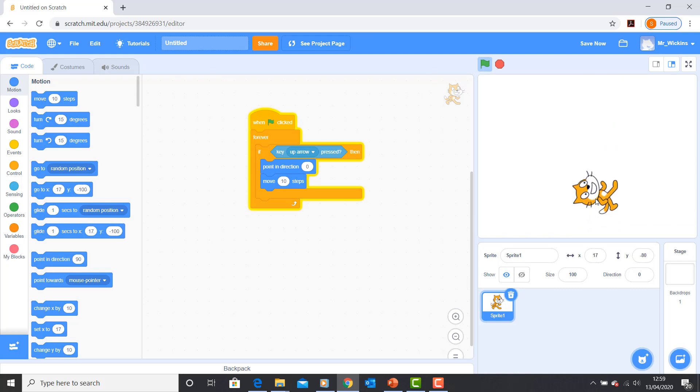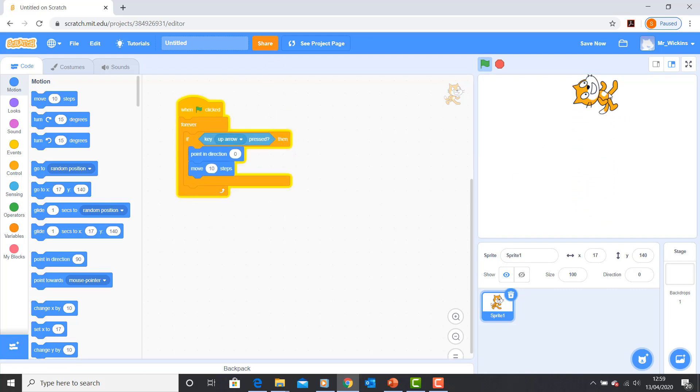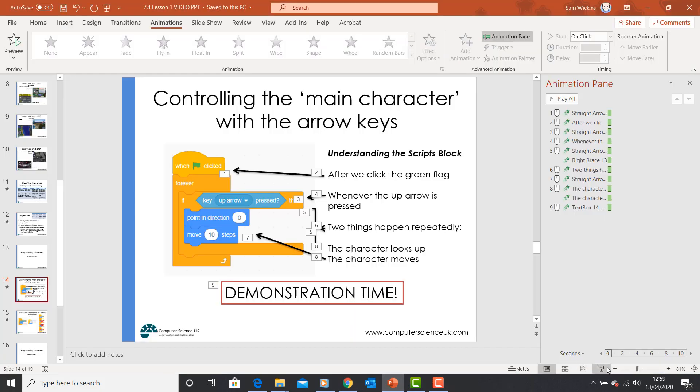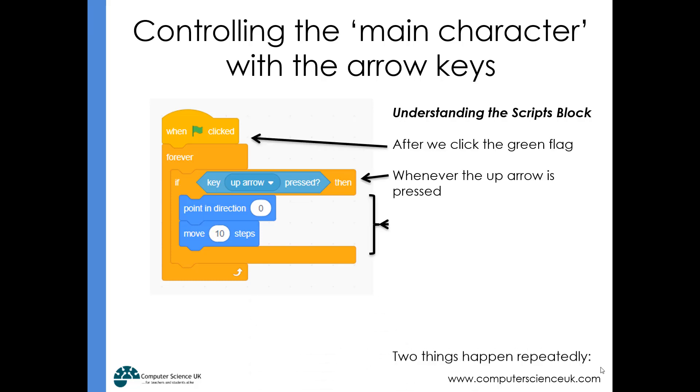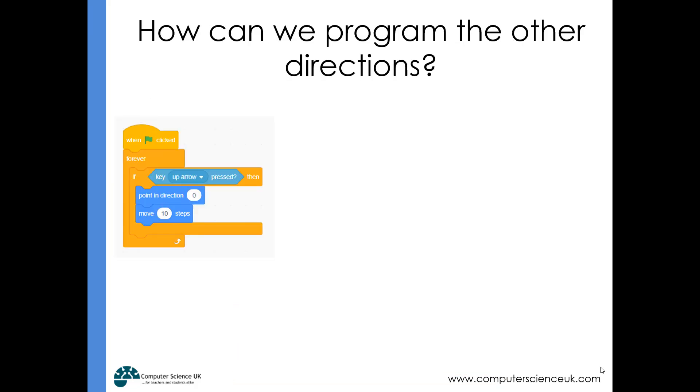If it is pressed, we want the character to point in the up direction and move 10 steps. If I click on the green flag and press up, you can see he's starting to move upwards. Every time I press the up arrow key, that sprite goes.